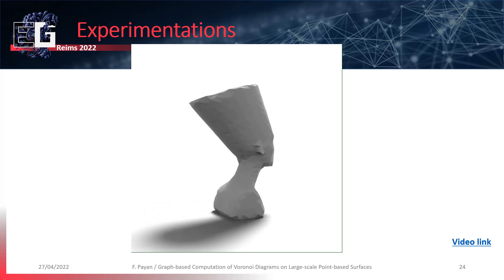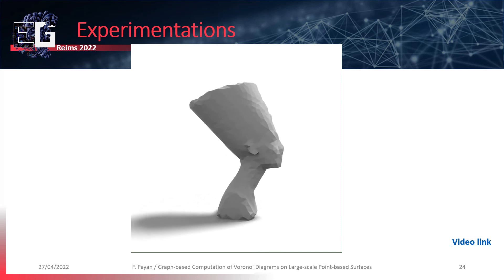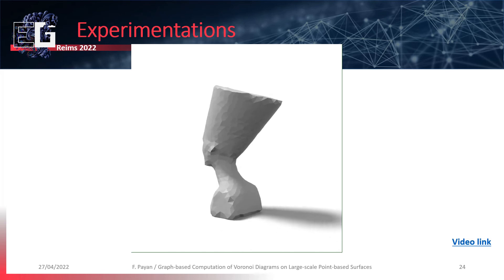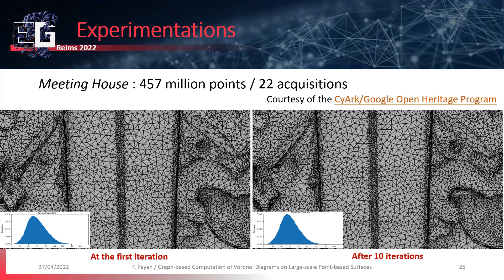The great advantage is that memory requirements are very low as we deal with the surface locally — we don't need to store all the data in memory, just the local graphs concerned along the workflow. On Meeting House, a real dataset containing billions of points: on the left, the triangulation from one simple Voronoi diagram created with our method; on the right, the same triangulation improved by relaxation after 10 iterations. The triangles are better shaped on the right, as we tend toward a centroidal diagram iteration after iteration, which the angle distribution confirms.